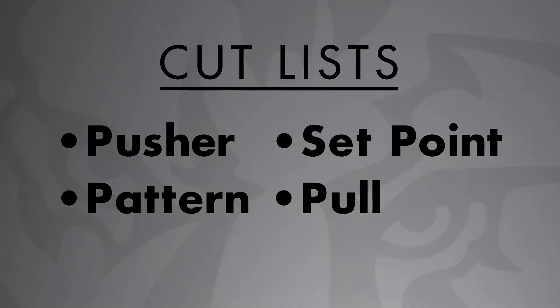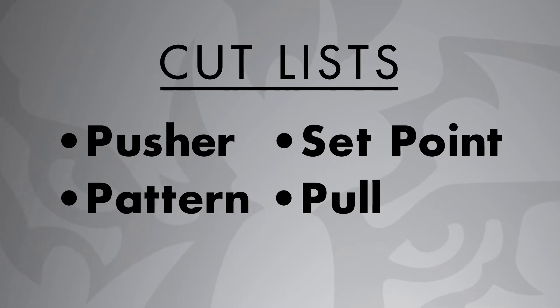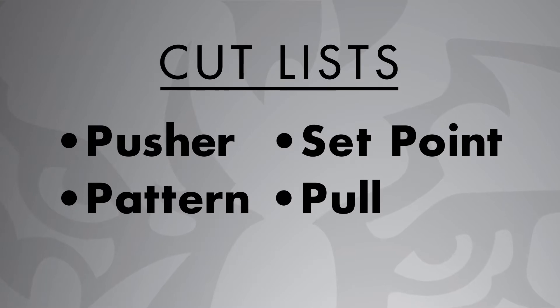Tiger Stops are designed to fit any machine tool where accuracy and repeatability are required. This includes chop saws, upcut saws, table saws, drills, iron workers, press brakes — you name it. This is why we have four different style lists to better suit your needs. The four types are pusher, set point, pattern, or pull list.